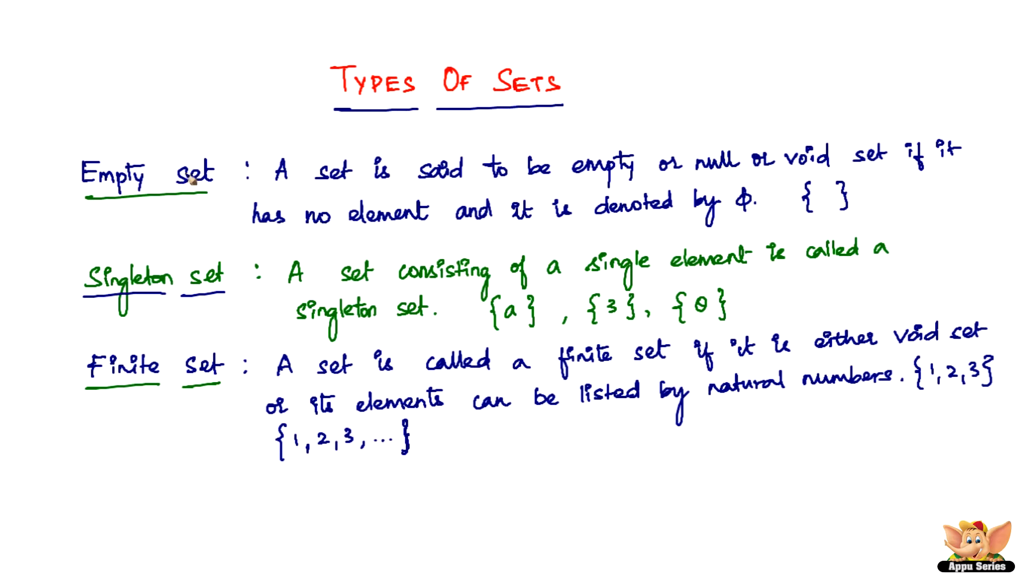All right, then. So the types of sets are empty set, singleton set and finite set. Well, when we talk about finite set, there also comes a set called as infinite set, which cannot be counted, which is pretty much understood. So that ends this video on types of sets. I'll see you in the forthcoming videos with more concepts based on sets.